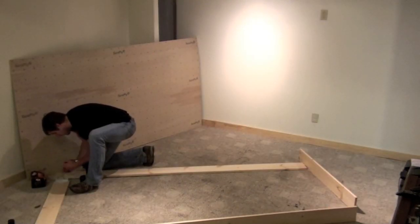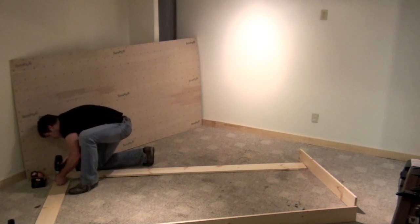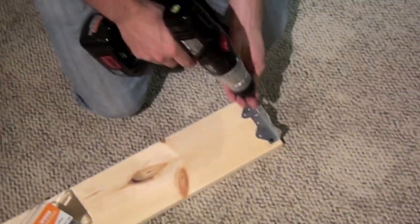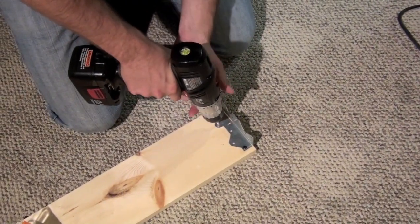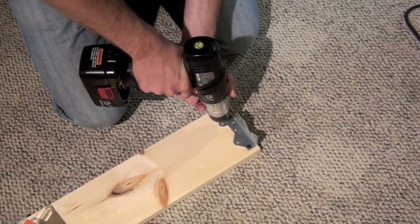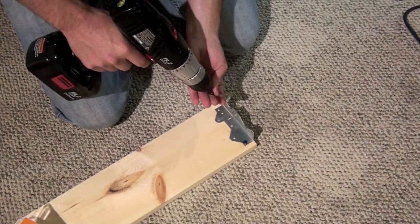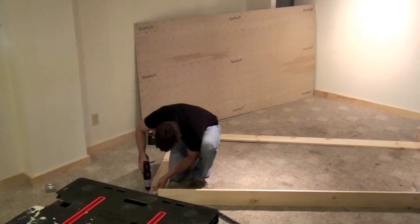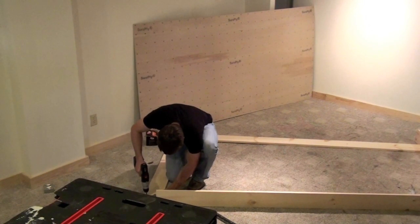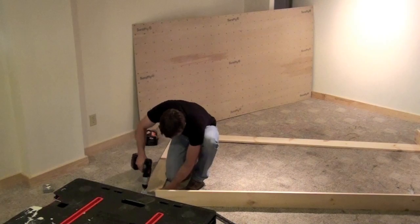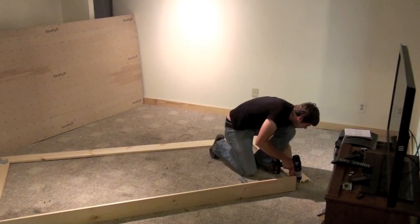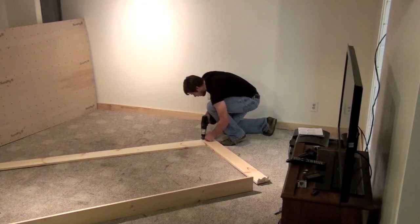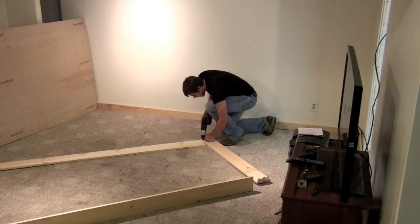And then fasten brackets to the top and bottom boards. Here's a close up of attaching the bracket. Putting two screws or three screws in each bracket to make sure it's secure. Here's the other side, here's the bottom side, and the last corner attaching that bracket.